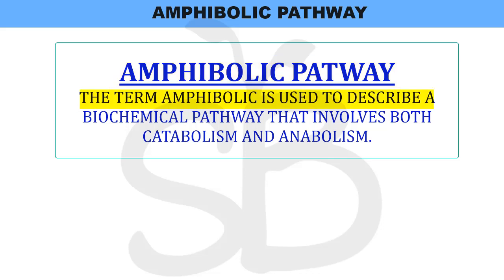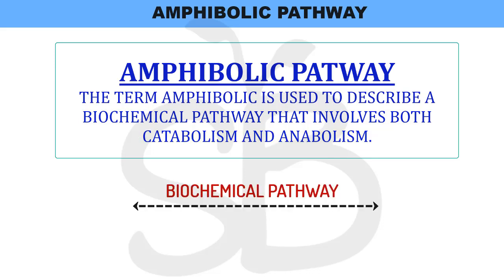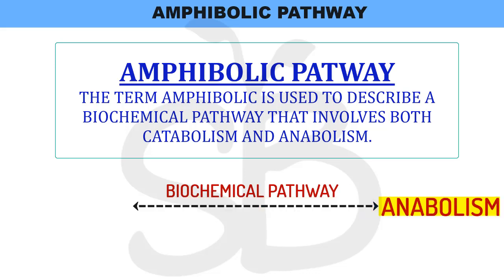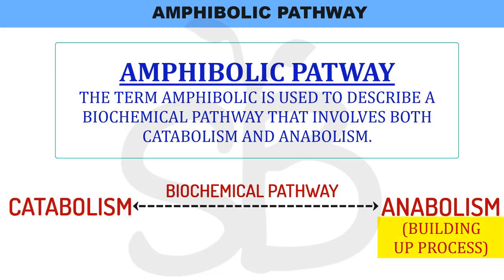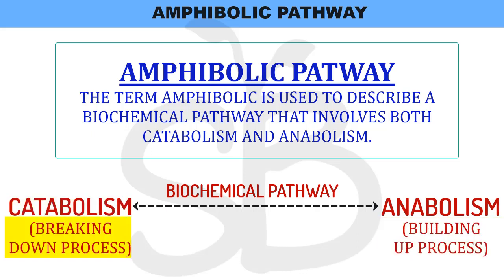The term 'amphibolic' is used to describe a biochemical pathway that involves both catabolism and anabolism. That particular pathway involves both an anabolism process and a catabolism process — that is, a building up process and a breaking down process.